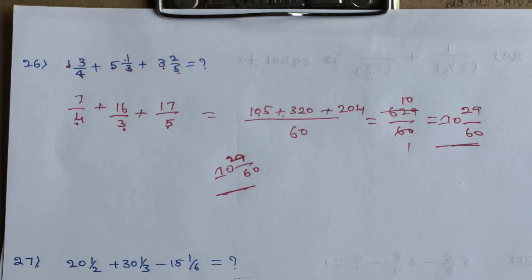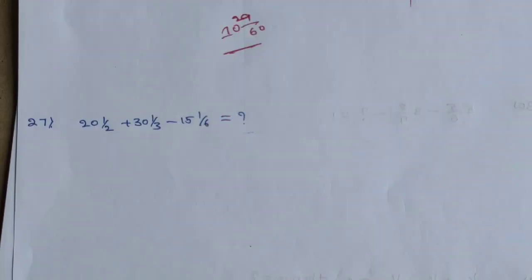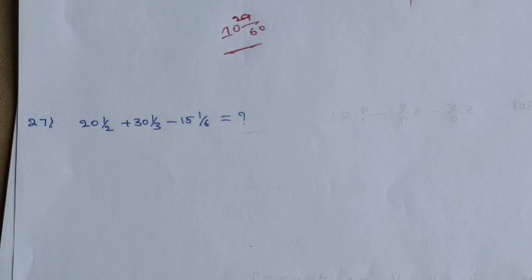Question 27 — very important, and going to railway exams. Find the value of 21 by 2 plus 31 by 3 minus 15 by 1 by 6.